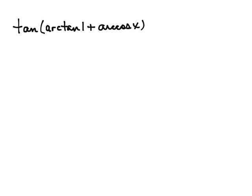Given the tangent of the arctangent of 1 plus the arccosine of x, we want to write this as an algebraic expression. We're going to use our tangent sum formula, where this is going to be like our u, and this is going to be like our v.